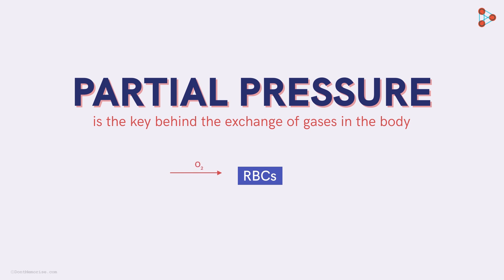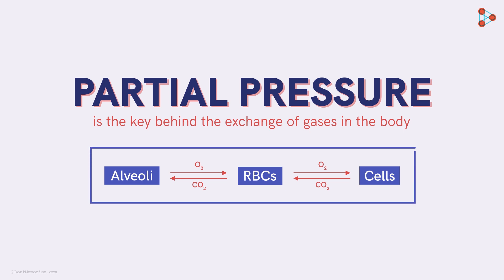RBCs grab the oxygen that diffuses in the blood stream from alveoli and pass it to the cells. Inversely, carbon dioxide gets in the RBCs to bind with the hemoglobin and gets transported to the lungs. But trust me, the processes are not that simple.